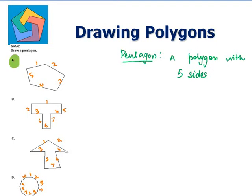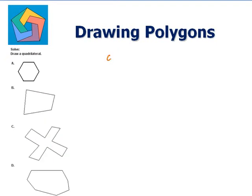Next problem. Solve. Draw a quadrilateral. A quadrilateral is a polygon with four sides. Let us count the number of sides in each figure.